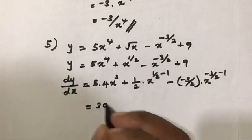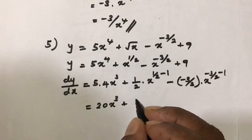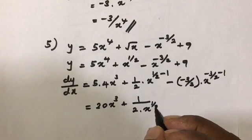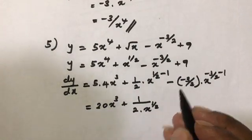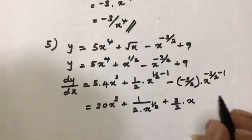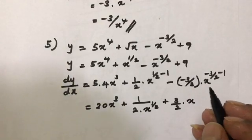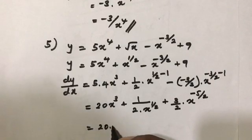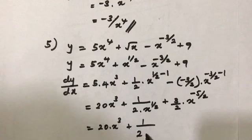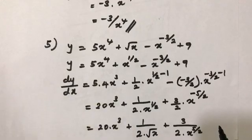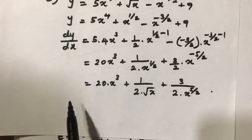Continuing: 5 times 4 is 20 times x cubed, plus 1/2 times x to the minus 1/2, plus 3/2 times x to the (minus 3/2 minus 1) which equals minus 5/2. So the answer is 20x cubed plus 1/(2√x) plus 3/2 times x to the minus 5/2. We are done with this chapter — thank you for watching.